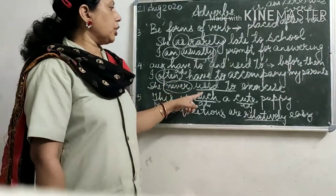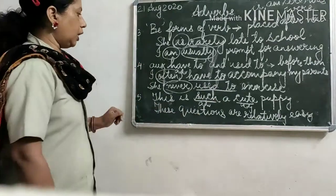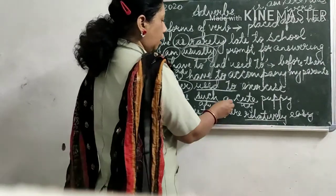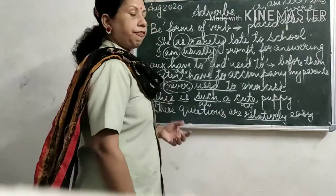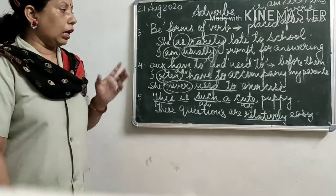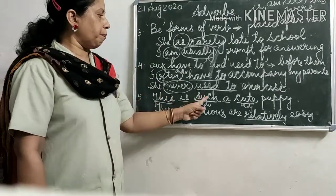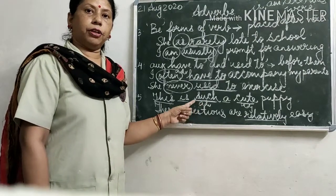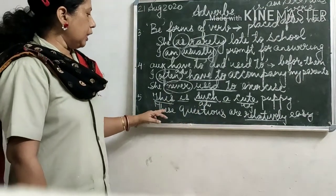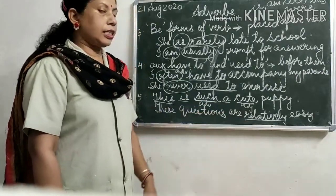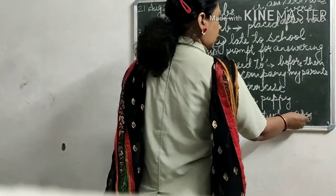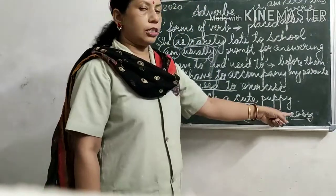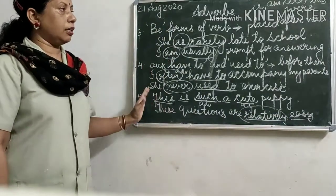When an adverb modifies an adjective, it is placed before the adjective and the article. For example: 'This is such a cute puppy' — the adverb goes before the adjective 'cute.' Another example: 'These questions are relatively easy' — 'relatively' is the adverb placed before the adjective 'easy.'